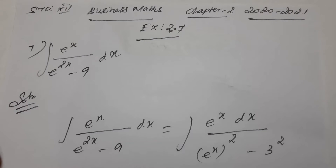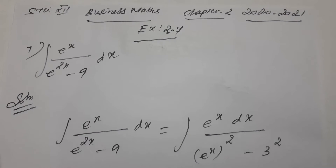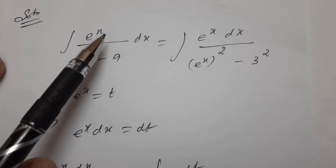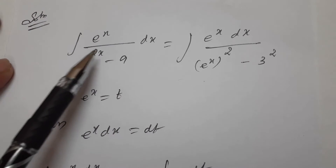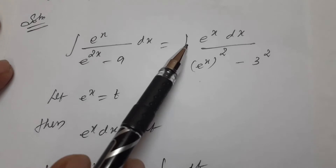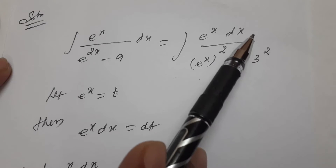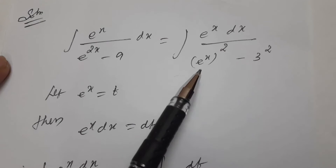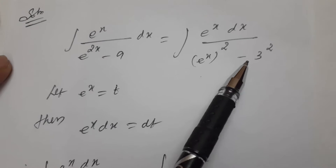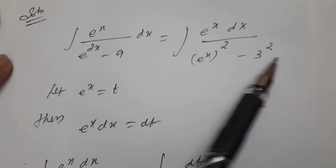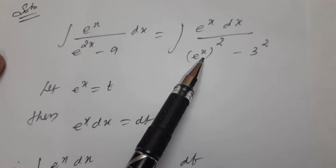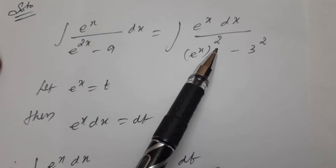Students, remember the formula we discussed before — we need to use that formula here. Integration of e power x divided by e power 2x minus 9 dx is equal to integration of e power x dx divided by e power x whole square minus 9. And 9 is 3 square. So we need to use that formula, but we can't directly apply it.